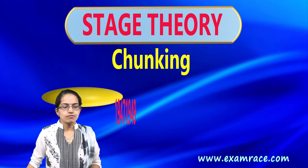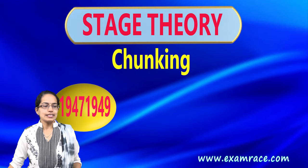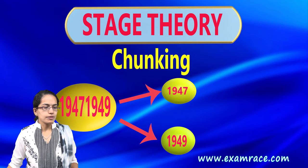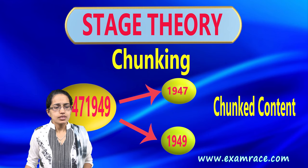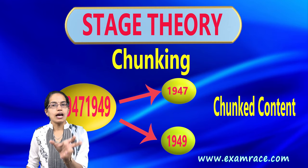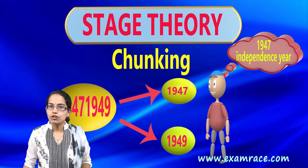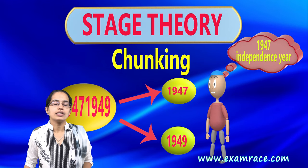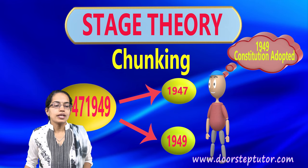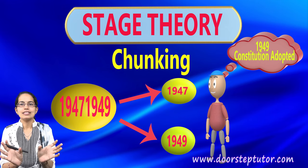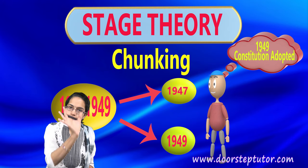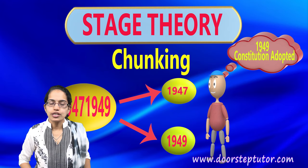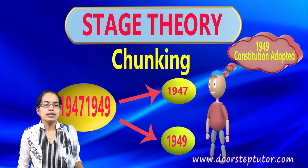The second way is chunking — breaking down information into small chunks. For example, if you have a long number, you can remember it as 1947 and 1949 by breaking it into two parts: 1947 as the year of India's independence and 1949 as the year the constitution was adopted. This is what is known as chunking, and it happens within short-term memory alongside maintenance rehearsal.